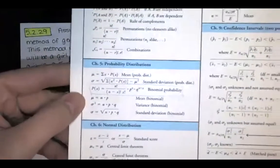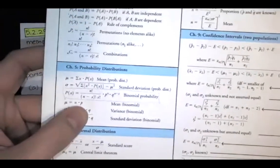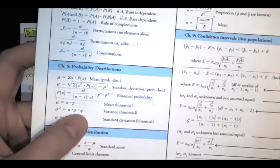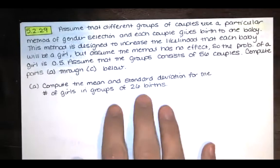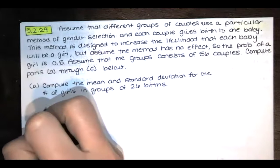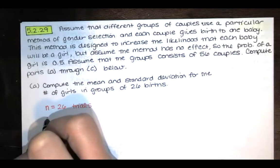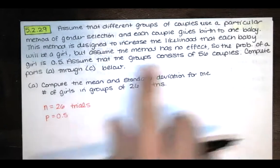We're in Chapter 5, and it says right here what the mean is. The mean is actually very intuitive — it's the sample size times the probability of success in one trial. The variance turns out to be that sample size times the probability of success in one trial times the probability of failure in one trial. You just take the square root of that to get the standard deviation when dealing with a binomial distribution. So first, we're asked to compute the mean and standard deviation for the number of girls in groups of 26 births.